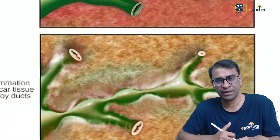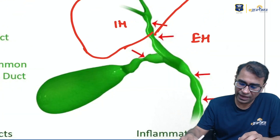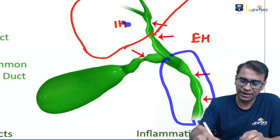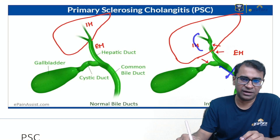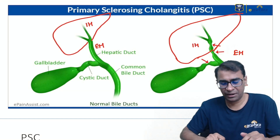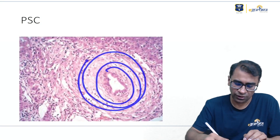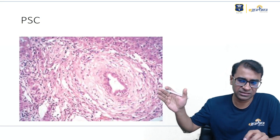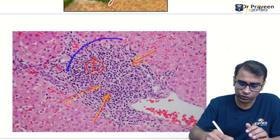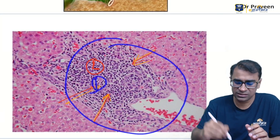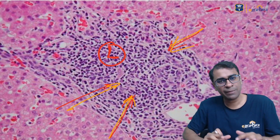In PBC, by contrast, only the intrahepatic bile duct is involved — not the extrahepatic. In PSC, you can see collagen rims arranged in concentric layers around the duct, giving it an onion skinning appearance. In PBC, there are dense lymphocytes infiltrating and destroying the intrahepatic bile duct entirely.